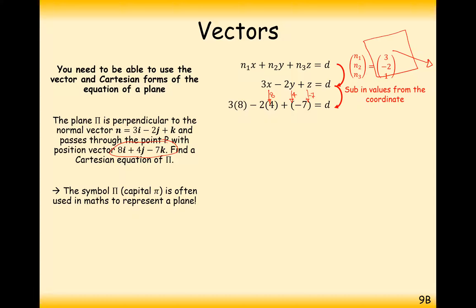So, subbing these values in, we get 3 times 8, minus 2 times 4, plus minus 7. Working out the value of d, we get d is 9. So, our final answer here is 3x, minus 2y, plus z, equals 9. Fantastic. That looks so much neater than the three vectors and the two letters at the front of two of those vectors.